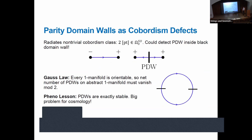More on parity domain walls: they are exactly stable. Earlier papers speculated about a parity cosmic string where going around it picks up a parity flip, which would destabilize the domain walls. What this shows is that parity strings are not a thing — there's no geometry or topology you can write down. So if you want a realistic Nelson-Barr model, you have to get rid of the parity domain wall somehow. Either you inflate them away, which is an issue, or there's a phenomenological problem: if your scale of CP violation is low, you need low-scale inflation. If you don't like inflation, you have to explain the domain walls away some other way.